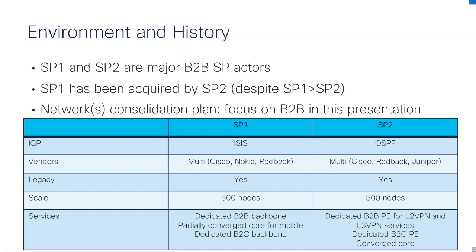Both networks have legacy — meaning very old devices. The scale is big: 500 nodes starts to be a big network, and both of them were almost the same size. In terms of services, SP1 offers quadruple play — mobile, triple play (IPTV, internet, voice over IP), plus B2B services with a dedicated backbone and dedicated core. SP2 has a converged core already with dedicated PEs for B2B and dedicated PEs for B2C. SP2 is Juniper-based.